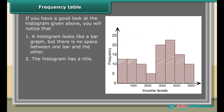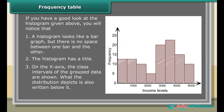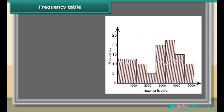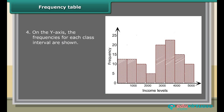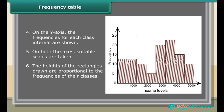The histogram has a title. On the x-axis, the class intervals of the grouped data are shown, and what the distribution depicts is also written below it. On the y-axis, the frequencies for each class interval are shown. On both axes, suitable scales are taken. The heights of the rectangles drawn are proportional to the frequencies of their classes.